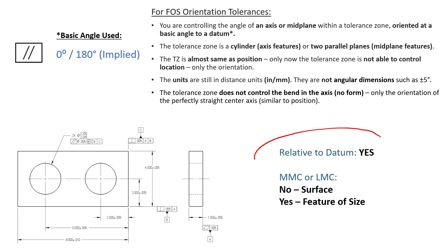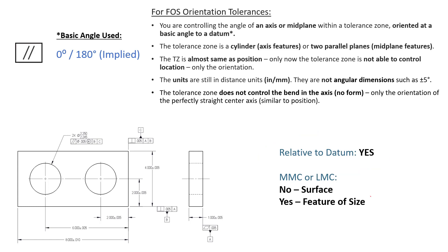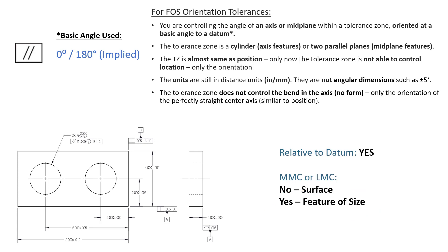The other key thing is it has to be relative to a datum. To use orientation controls — parallelism specifically in this case — it has to be relative to a datum. And because this is a feature of size and not a surface, we are allowed to use the MMC or LMC modifiers. I did include that in this example drawing. So let's blow up this drawing and take a look.